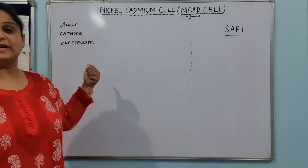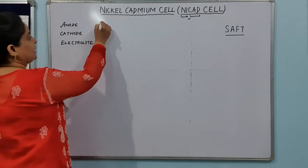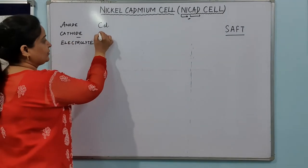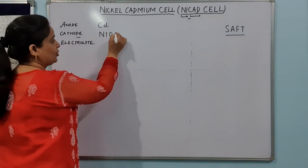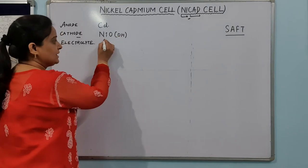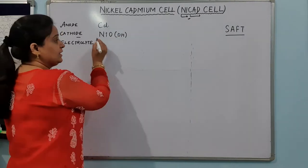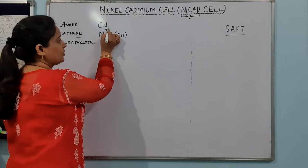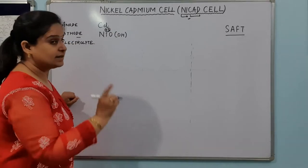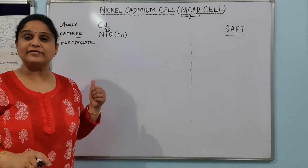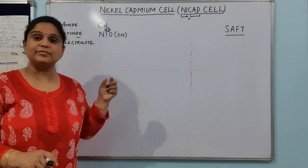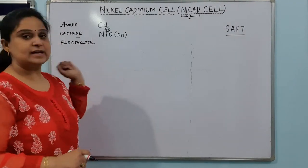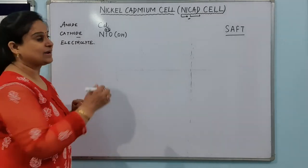In this cell, the anode is Cadmium. The cathode is made up of NiOOH, that is Nickel Oxide Hydroxide. This is the Nickel Oxide Hydroxide, and Nickel's oxidation state will come out as plus 3, just like we calculated in the case of Manganese Oxide Hydroxide in the dry cell.